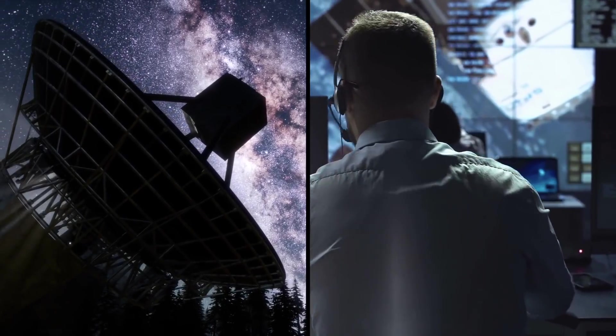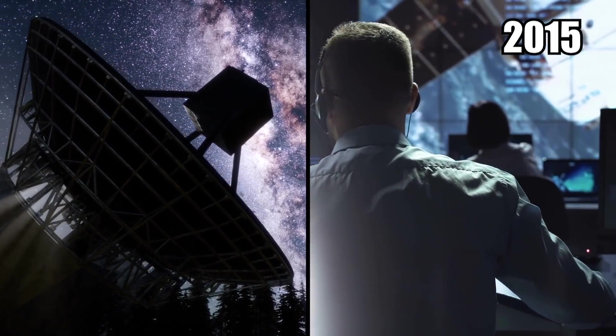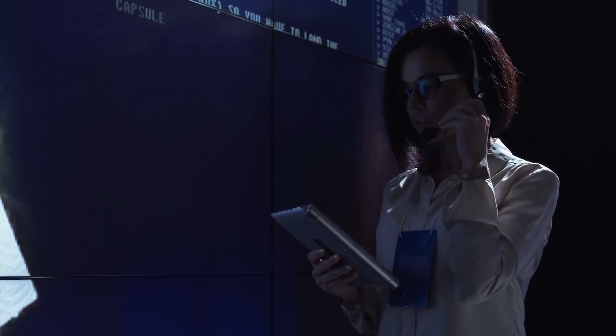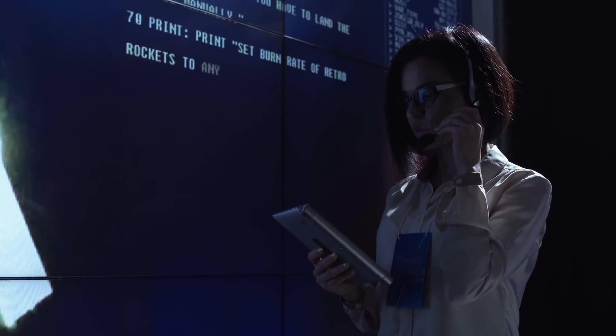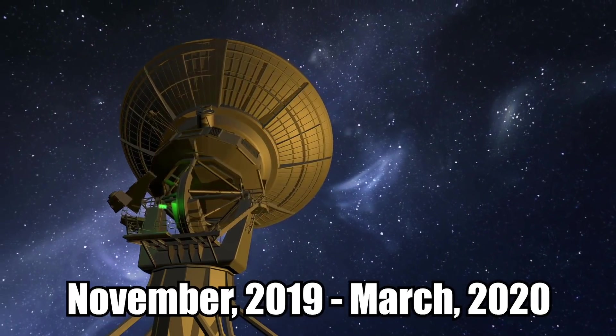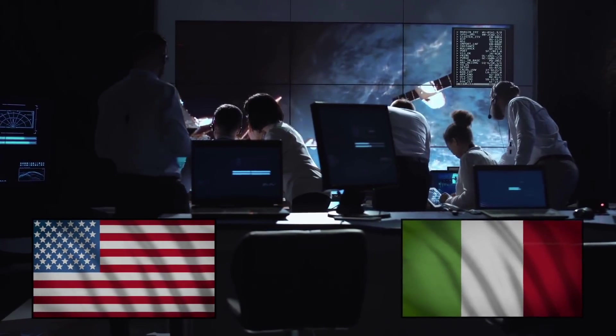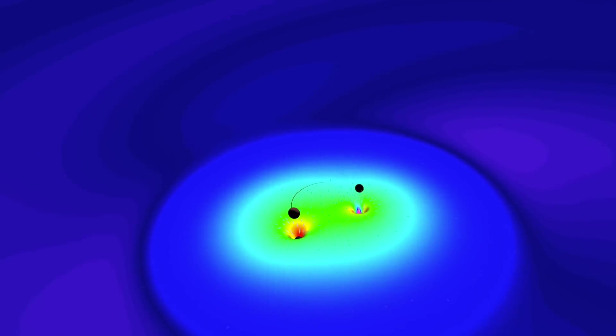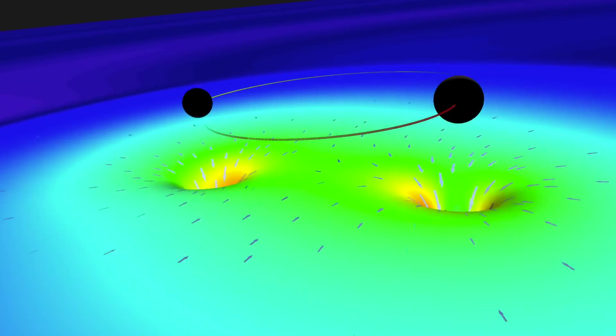Gravitational waves were detected for the first time in 2015. Since then, scientists have focused on improving their ability to spot them. And their work seems to be paying off. Between November 2019 and March 2020, researchers based in the US and Italy detected 35 separate gravitational wave events. That's more than a third of the 90 that have been discovered to date.